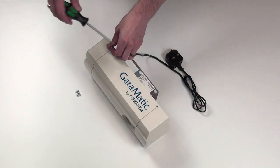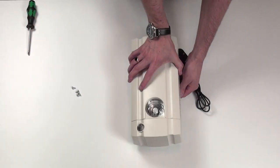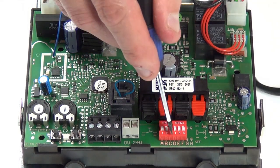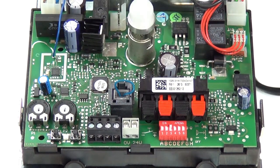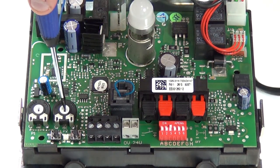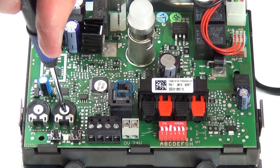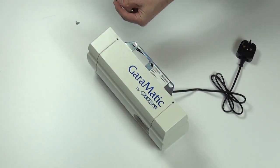Next, undo the four screws and remove the outer cover on the operator unit. Locate the printed circuit board and turn the dip switch marked C to the on position. Then turn the adjuster marked P2 clockwise to maximum. Replace the cover on the operator unit.